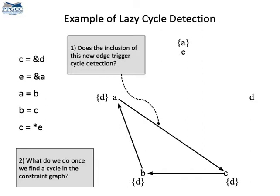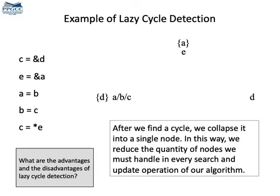Including this new edge, we also trigger cycle detection, because the points-to set of A and C is the same. Cycle detection will naturally find the cycle, and then it groups the three vertices, that is A, B and C, into a single node, that I'm calling A bar B bar C.